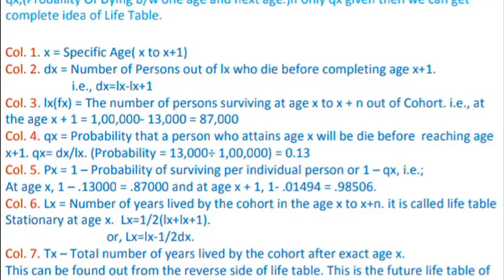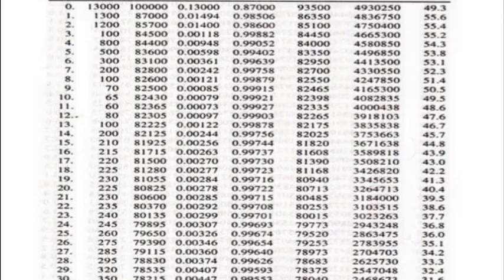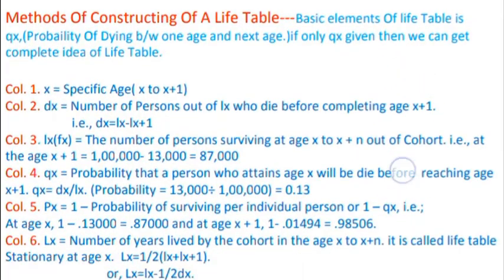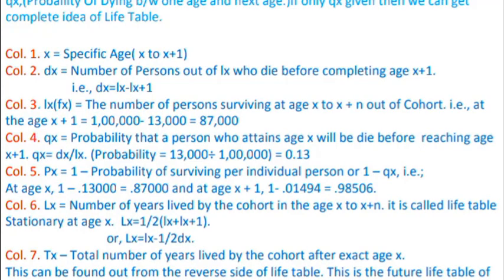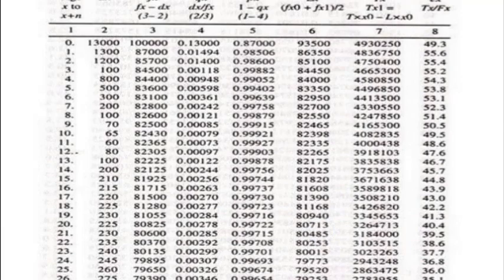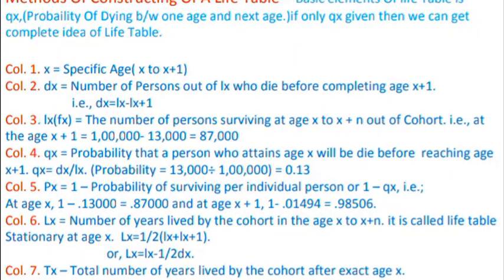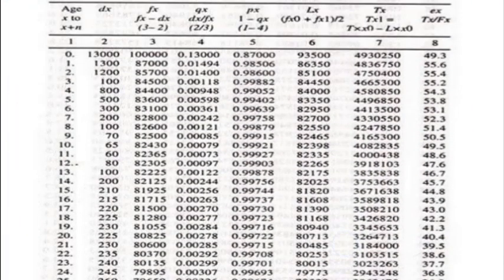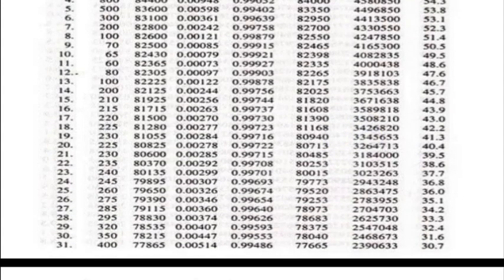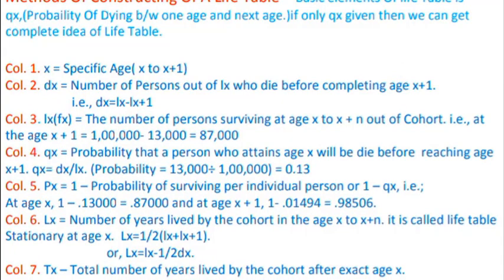Looking at the table: at age zero, the cohort starts. In the second row, 87 people are shown as zero — meaning these people survived. So 87 people survive and 13 people did not survive. This tells us about the surviving persons — the number of persons surviving from x to x+n out of the cohort. If we deduct, we get the survival rate.